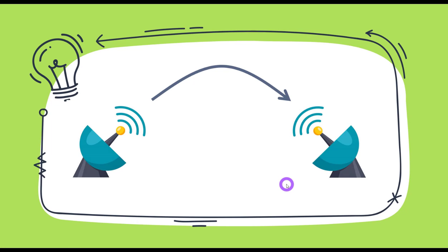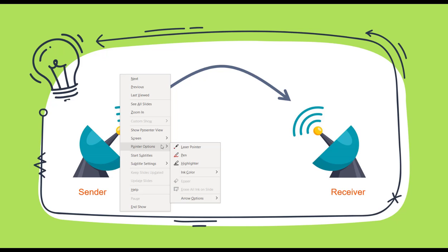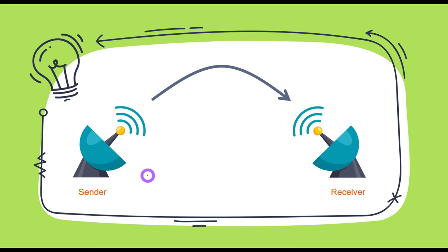In signal transmission, when we are sending a signal, we have a sender from where the signal is being sent and we have a receiver which receives that signal. The signal can be in bits. Let's say we have a message which is being sent in three bits.